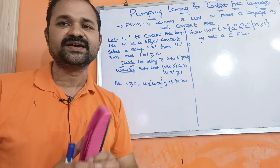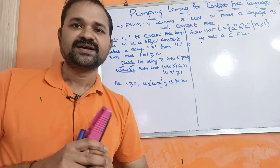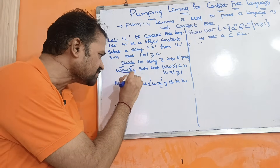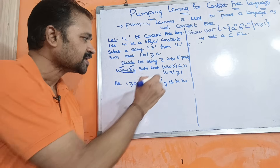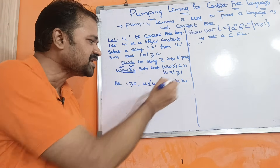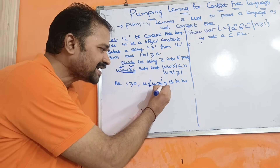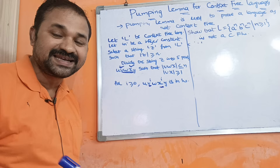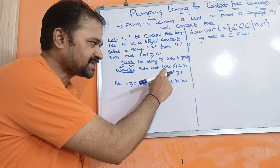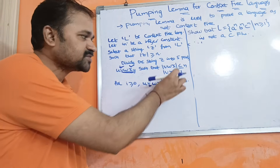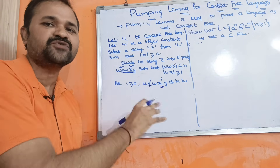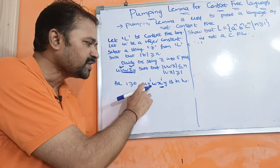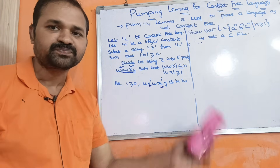We divide z into parts u, v, w, x, y satisfying two conditions. The first condition is |vwx| ≤ n — the middle part should be less than or equal to n. The second condition is |vx| ≥ 1, because we are pumping (incrementing) v and x, with i = 0, 1, 2, and so on. If these two conditions are satisfied, we check that for all i ≥ 0, u v^i w x^i y is in L.